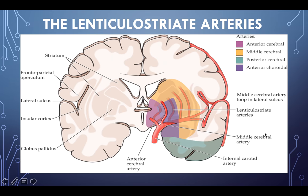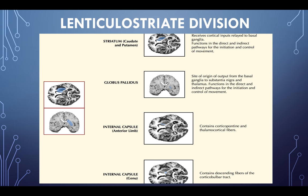The lenticulostriate arteries branch from the middle cerebral artery and supply the striatum — where the basal ganglia live — which are critical for movement. When the lenticulostriate arteries are compromised, you'll see changes in that region of the brain affecting movement function.